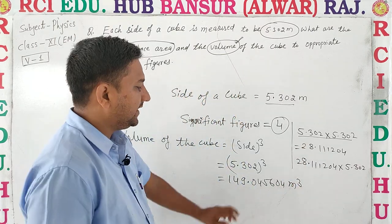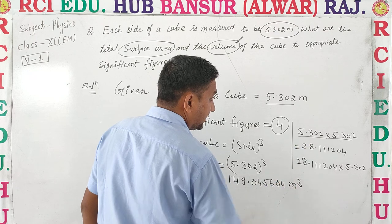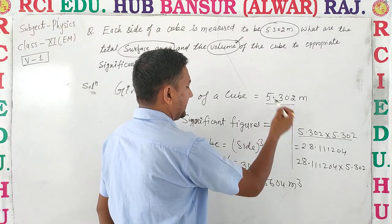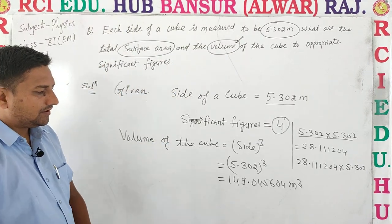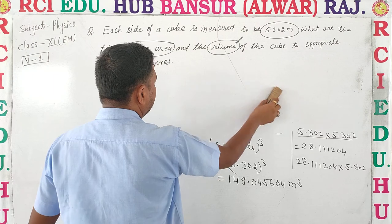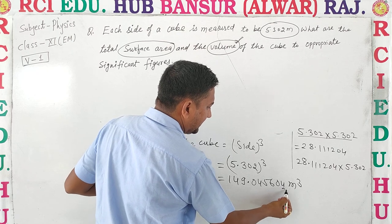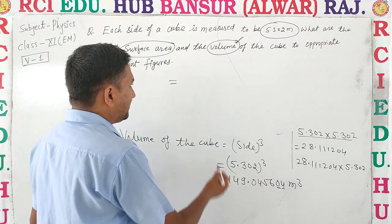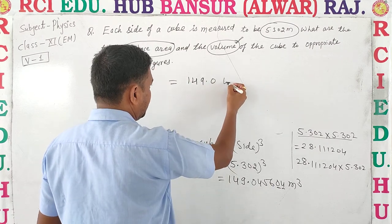Significant figures check करो: 1, 2, 3, 4, 5, 6, 7, 8, 9 — 9 significant figures हैं। Answer आना चाहिए 4 significant figures में। Rounding off करते हैं। 4 है — 5 से less than, remove. 0 है — remove. तो आ जाता है 149.0456.